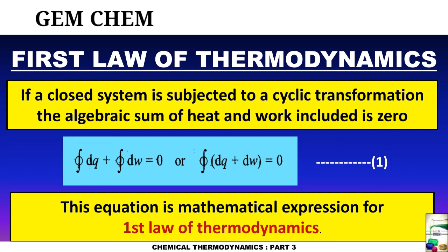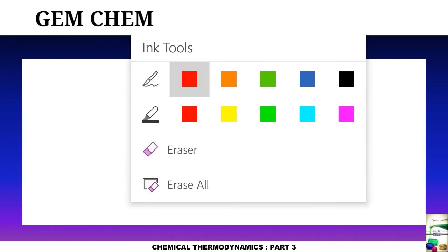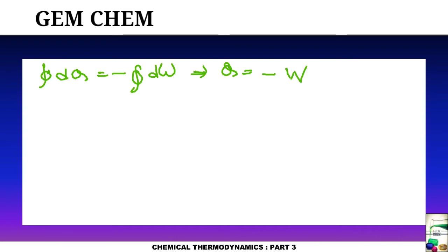This equation is a mathematical expression for the first law of thermodynamics. Since dq + dw has a cyclic integral of zero, it must be an exact differential. From this we can write: cyclic integral of dq equals minus cyclic integral of dw, which gives q = −w, from which the sign convention can be proved.